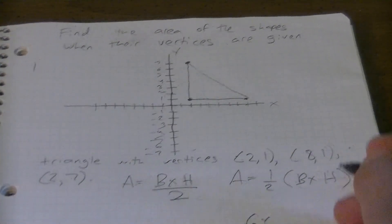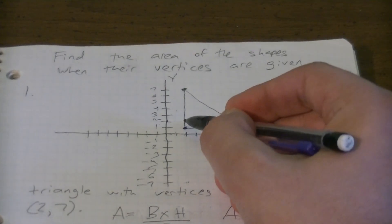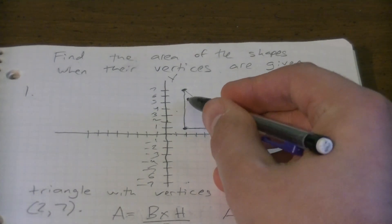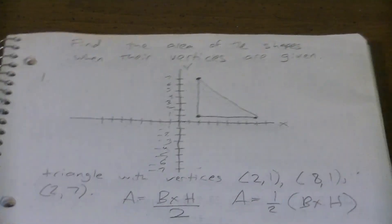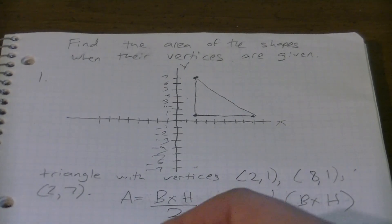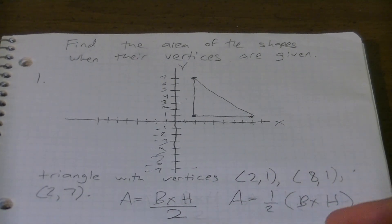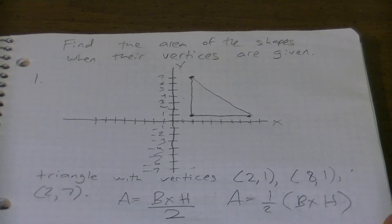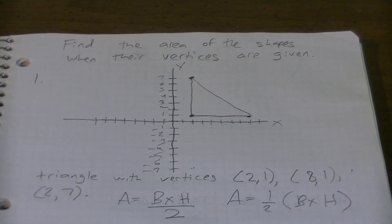What's our height? Our height is one, two, three, four, five, six. Or we could have just done seven minus one along our y-axis: six. So six times six divided by two - that's 36, right?